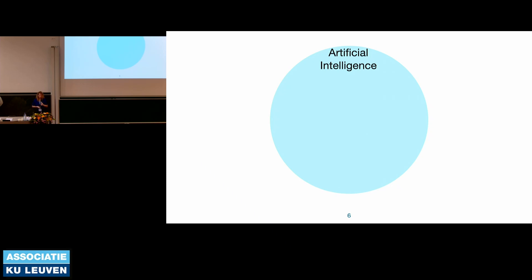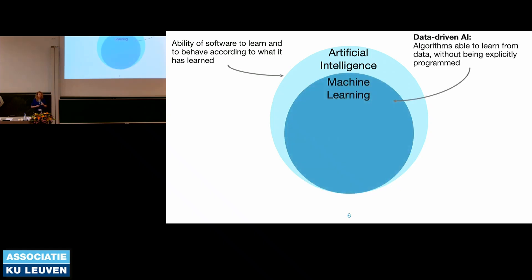I will define AI for this lecture as the ability of software to learn and to behave in accordance with what it has learned. We are not talking about exactly how to obtain that — that is where machine learning comes in as a subset of AI, which is a data-driven approach. It sees a lot of data and based on those examples, it learns how to solve certain tasks. Importantly, machine learning is not explicitly programmed to solve a task; it only sees data and figures out how to solve it itself.